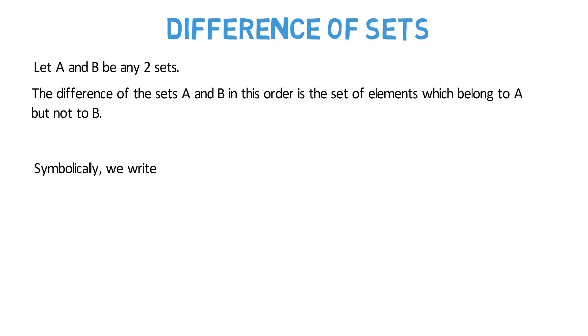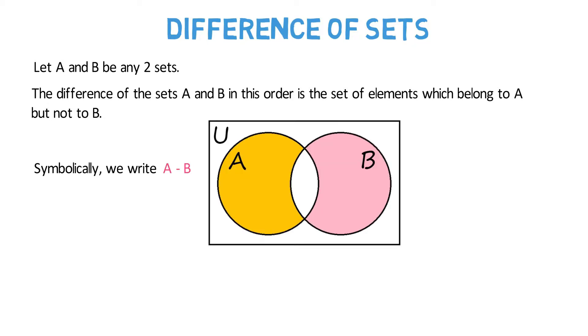Symbolically, we write A minus B. In the Venn diagram, A minus B is represented by the region that includes A but not B. Similarly,